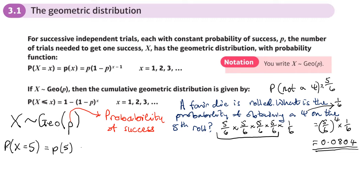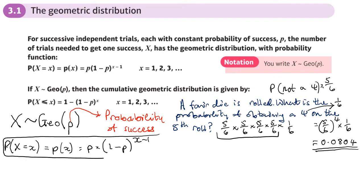That calculation was equal to the probability of success times the probability of failure to a certain power. Because success happened on the fifth attempt, we wanted failure to happen four times. Generalizing with X: the probability is P times (1−P) to the power of X minus one. This is common sense to work out the probability of success happening on a particular trial.